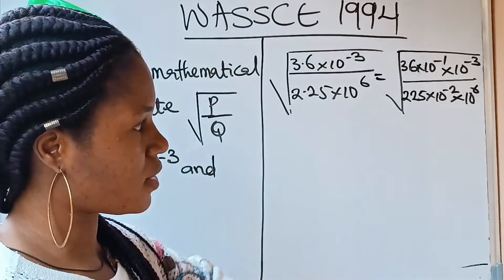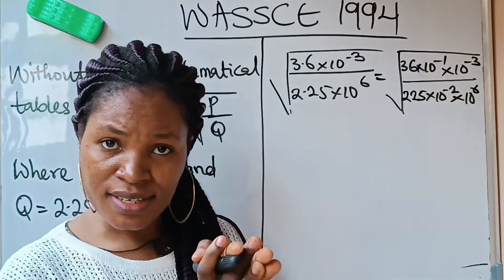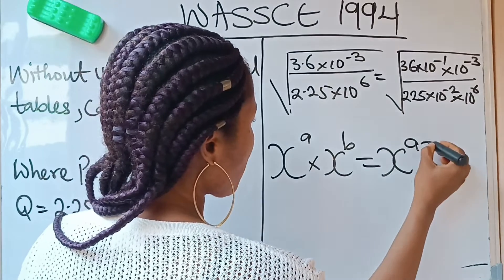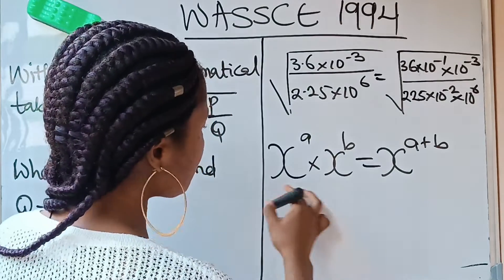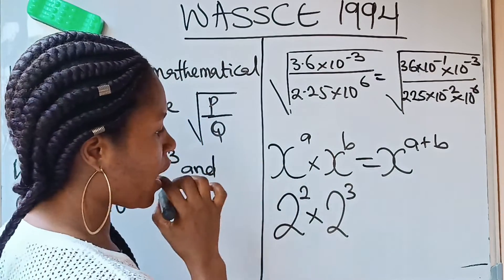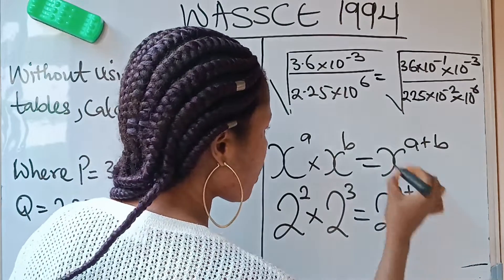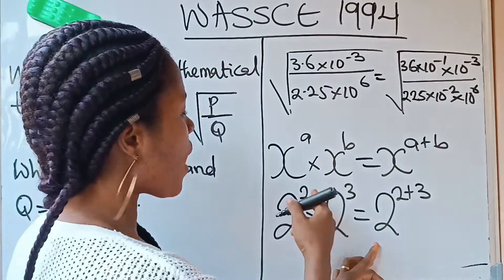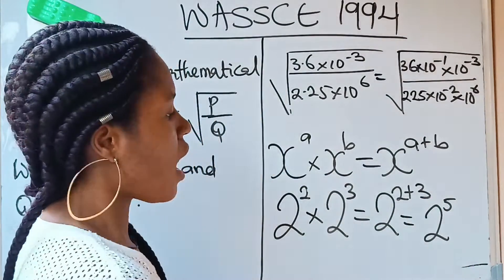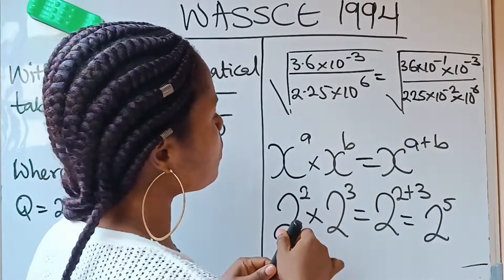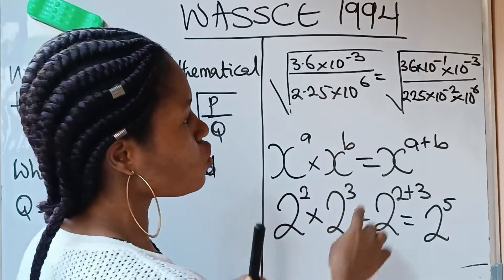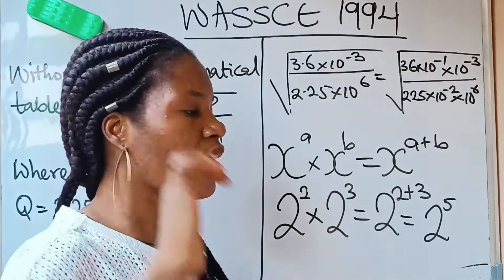Now let us remember this law of indices: x raised to the power of a, times x raised to the power of b, equals x raised to the power of a plus b. For example, 2 raised to the power of 2 times 2 raised to the power of 3 equals 2 raised to the power of 2 plus 3, which is 2 raised to the power of 5. We take one base and add their powers. We have 10 raised to the power of minus 1 times 10 raised to the power of minus 3 — they both have base 10 and are multiplying, so we pick one 10 and add the powers.